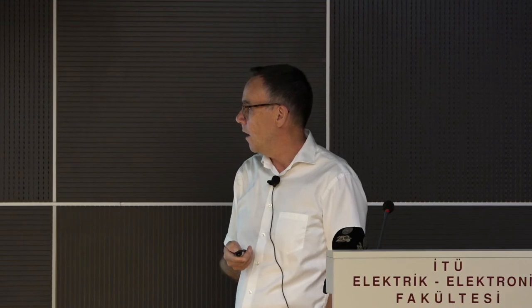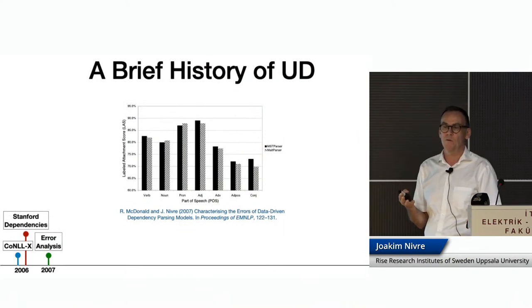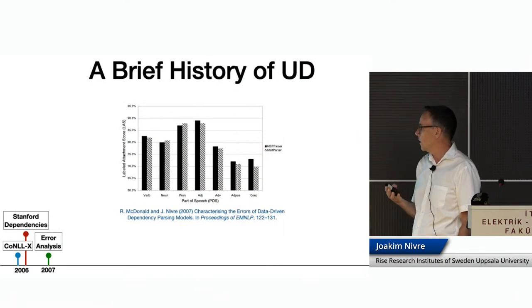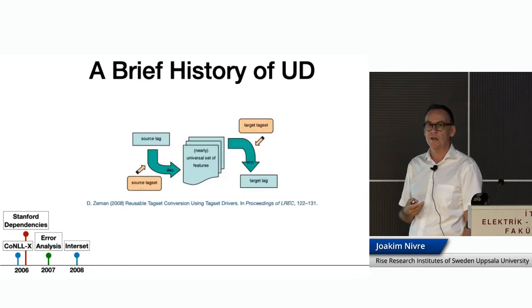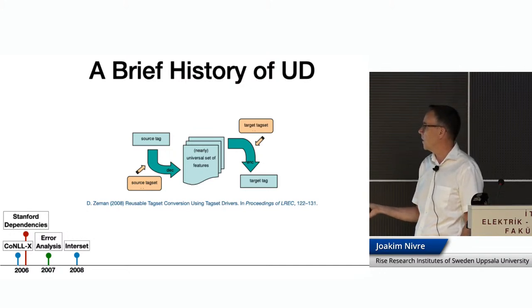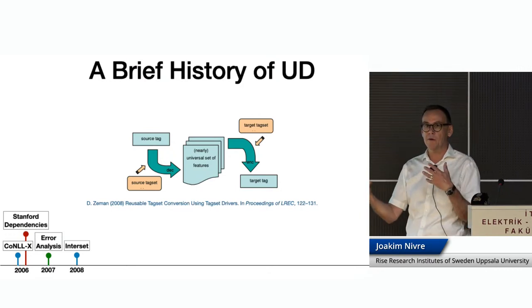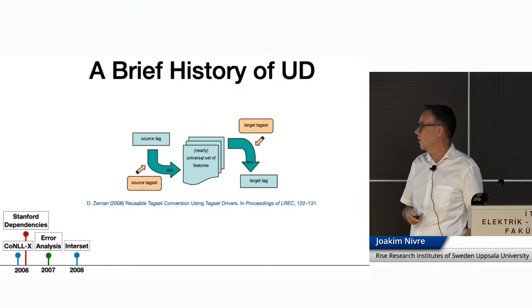At about the same time, my colleague Dan Zeman in Prague approached the same problem in a more principled way by developing this so-called inter-set interlingua — a nearly universal set of features that you can use to map different tagsets from and to different part-of-speech tagsets, enabling comparison of part-of-speech categories across languages.